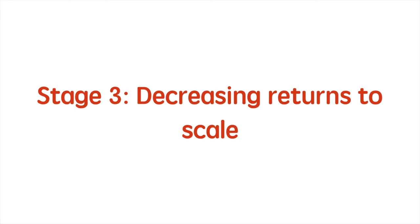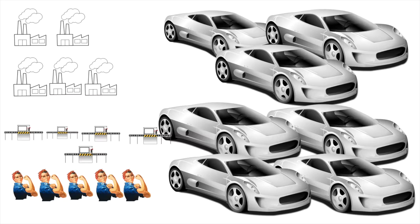Next up, decreasing returns to scale. The change in production inputs from the point of constant returns has been increased by 25%. However only 1,000 additional cars have been produced, indicating that the increase in output is positive 16.7%. Since the percentage increase in production inputs is greater than the percentage increase in production output, the firm is now experiencing decreasing returns to scale.